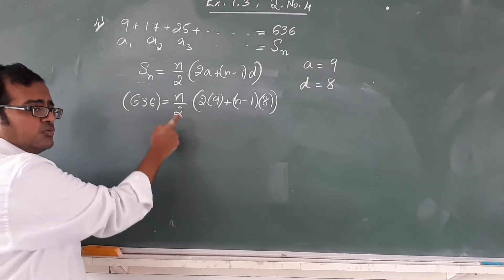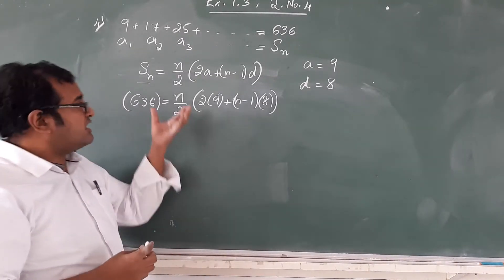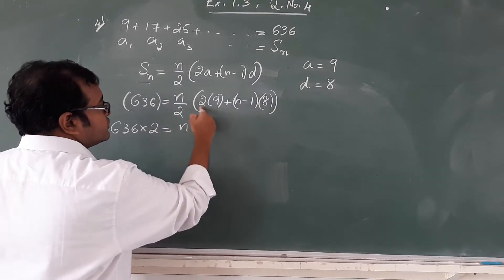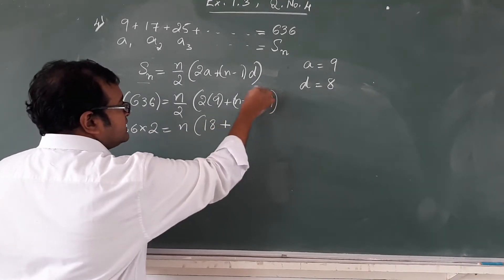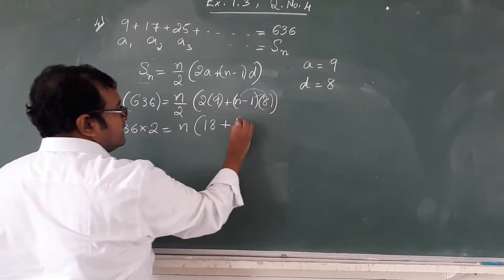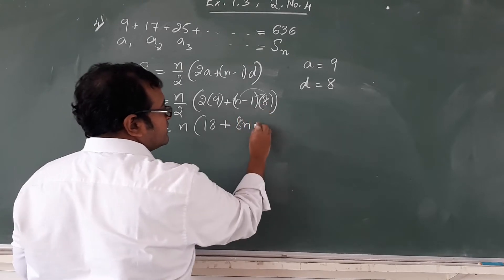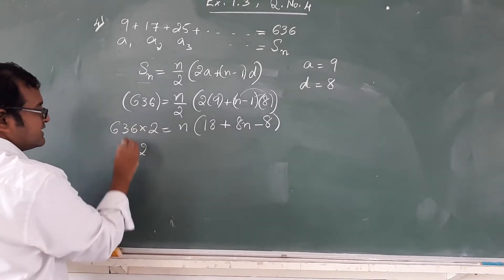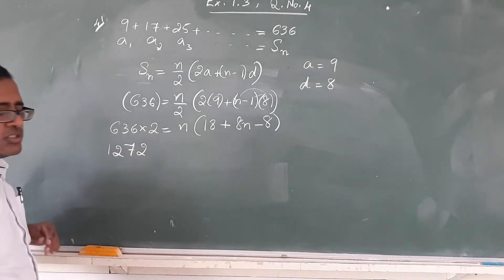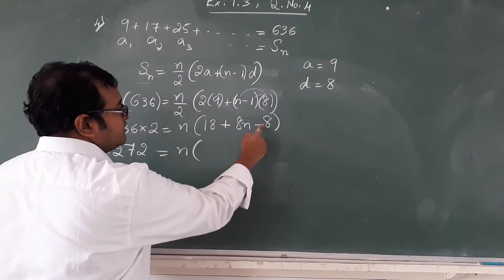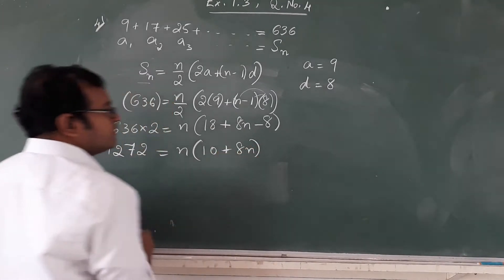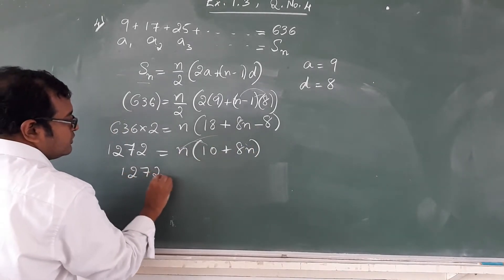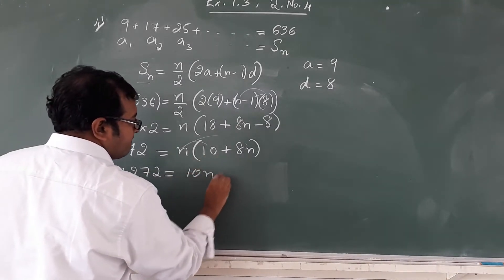For the substitution divided by 2, when it comes to the other side that is called transposition. By transposition it becomes multiplied by 2. So it is 636 times 2 which equals n times, 2 times 9 is 18 plus 8 by right distributive property becomes 8 times n, 8n minus 1 times 8 becomes minus 8. Multiplying 636 times 2 is 1272, which equals n times 18 minus 8 is 10 plus 8n. Again this time it is left distributive property. By applying left distributive property we get 1272 equals 10n plus 8n square.